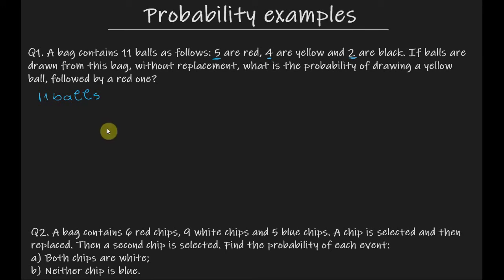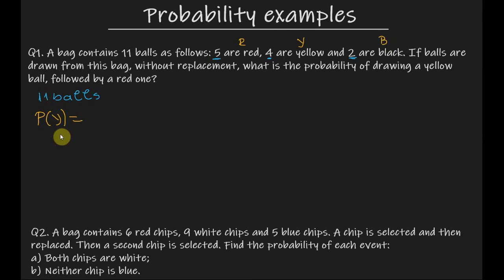The probability of drawing a yellow ball first is equal to P of Y. I will name this as event Y, the red balls as event R, and the black balls as event B. So the probability of drawing a yellow ball first equals the number of yellow balls in the bag divided by the total number of balls in the bag — that is 4 over 11.